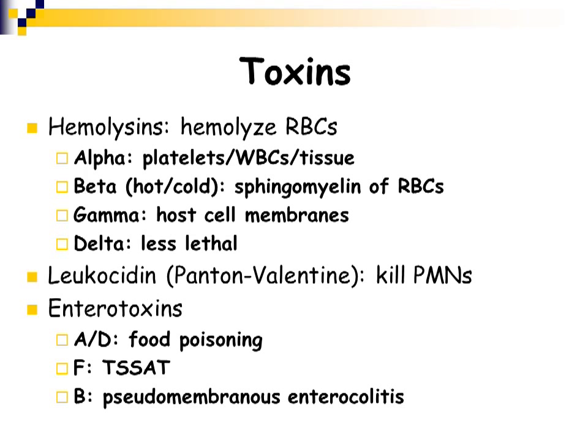The hemolysins that hemolyze red blood cells include alpha, beta, gamma, and delta hemolysins. There is also leukocidin — Panton-Valentine leukocidin — and the enterotoxins. The enterotoxins are what cause food poisoning. There is a type of food poisoning caused by staphylococcus aureus. The A through D enterotoxins cause food poisoning. The F toxin causes a toxic shock-like syndrome, and the B toxin causes pseudomembranous enterocolitis, which is a severe inflammatory reaction in the intestines.